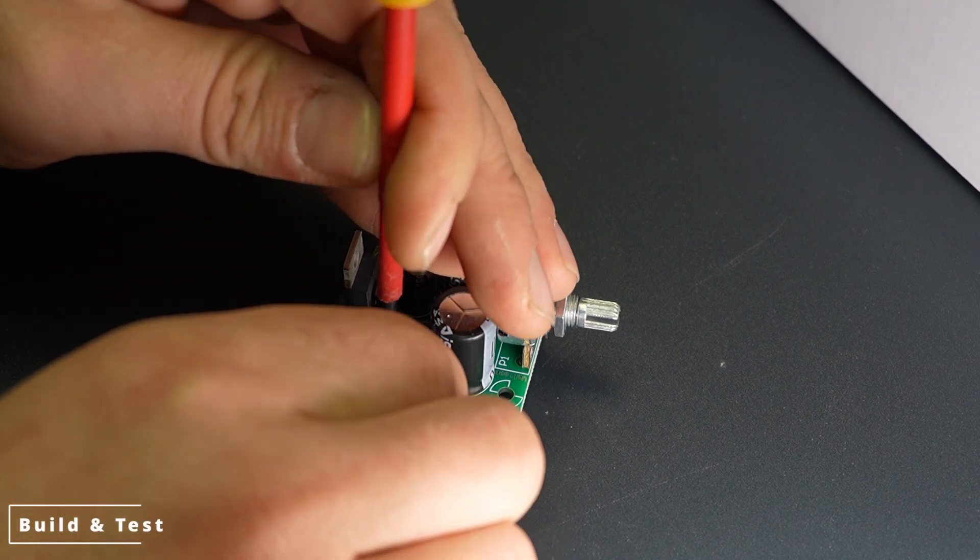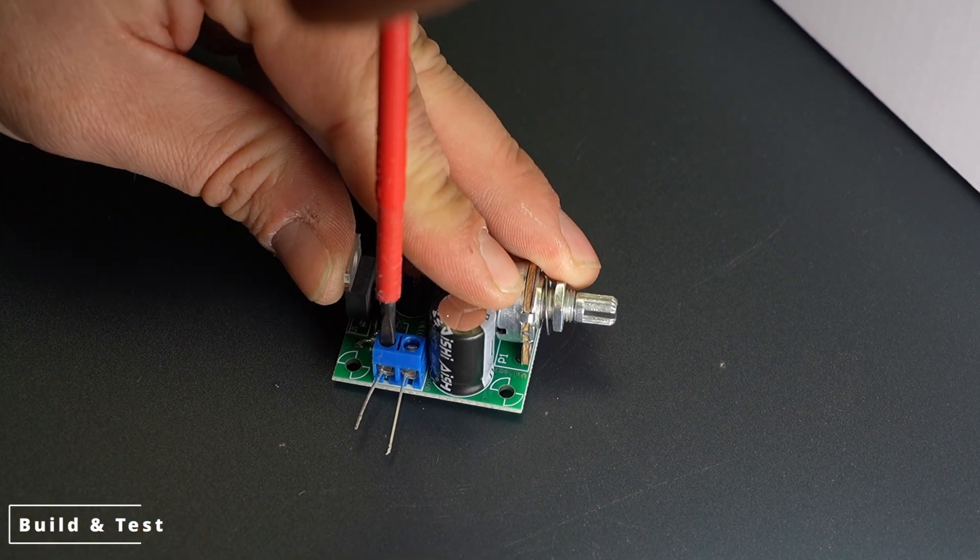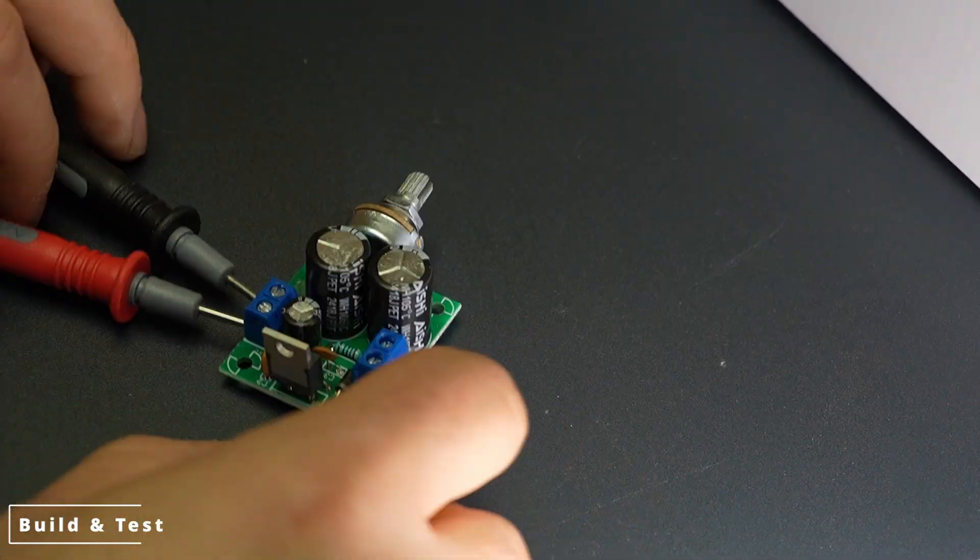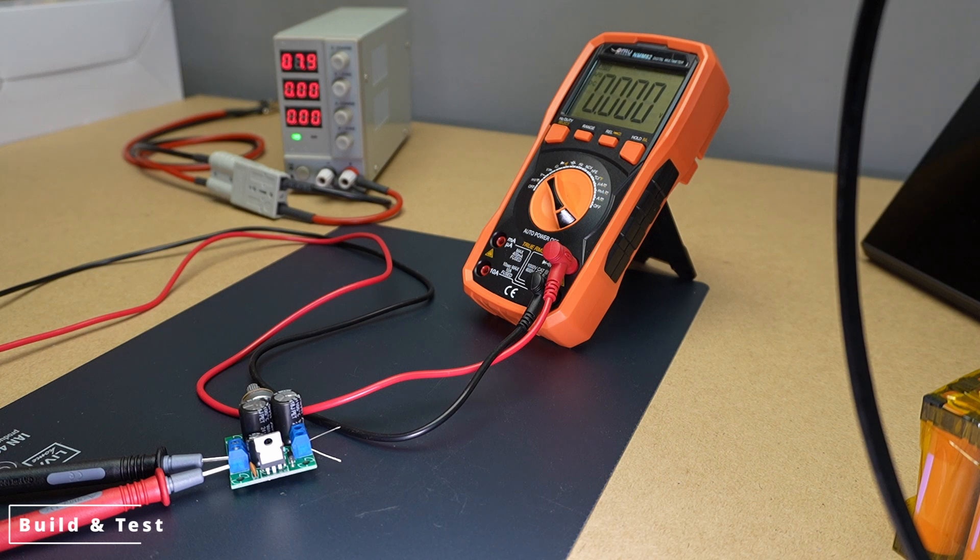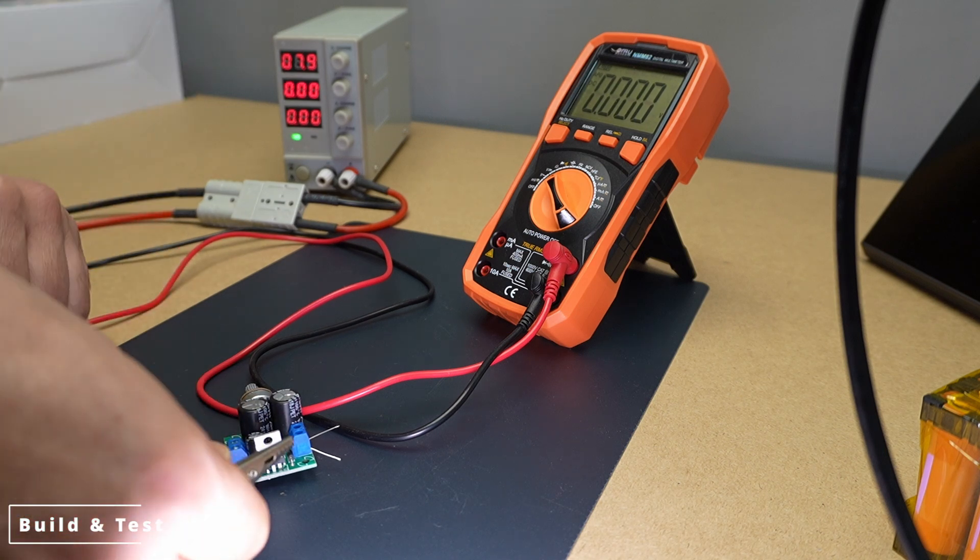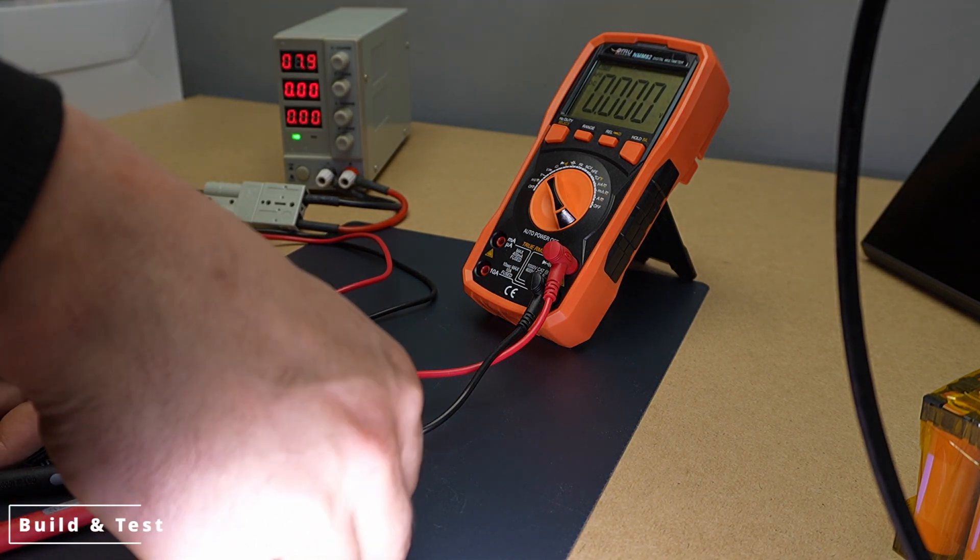Preparations. First, I'll connect the bench power supply to the circuit's input connector. I'll supply power between 8 and 24 volts, which is the designed operating range for the kit. Make sure the polarity is correct. Connect the positive lead to the appropriate input terminal and the negative lead to the negative terminal.